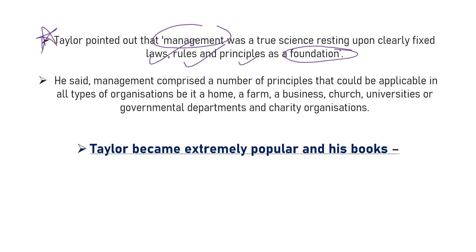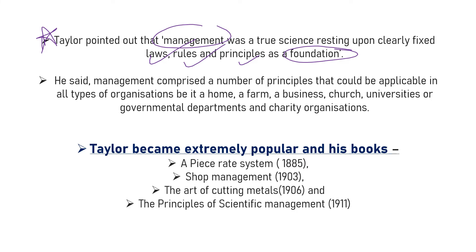Taylor became extremely popular, and these are the books he wrote during his lifetime that you need to remember: A Piece Rate System (1895), Shop Management (1903), The Art of Cutting Metals (1906), and The Principles of Scientific Management (1911). Remember these books as these kinds of questions are asked very frequently in examinations.